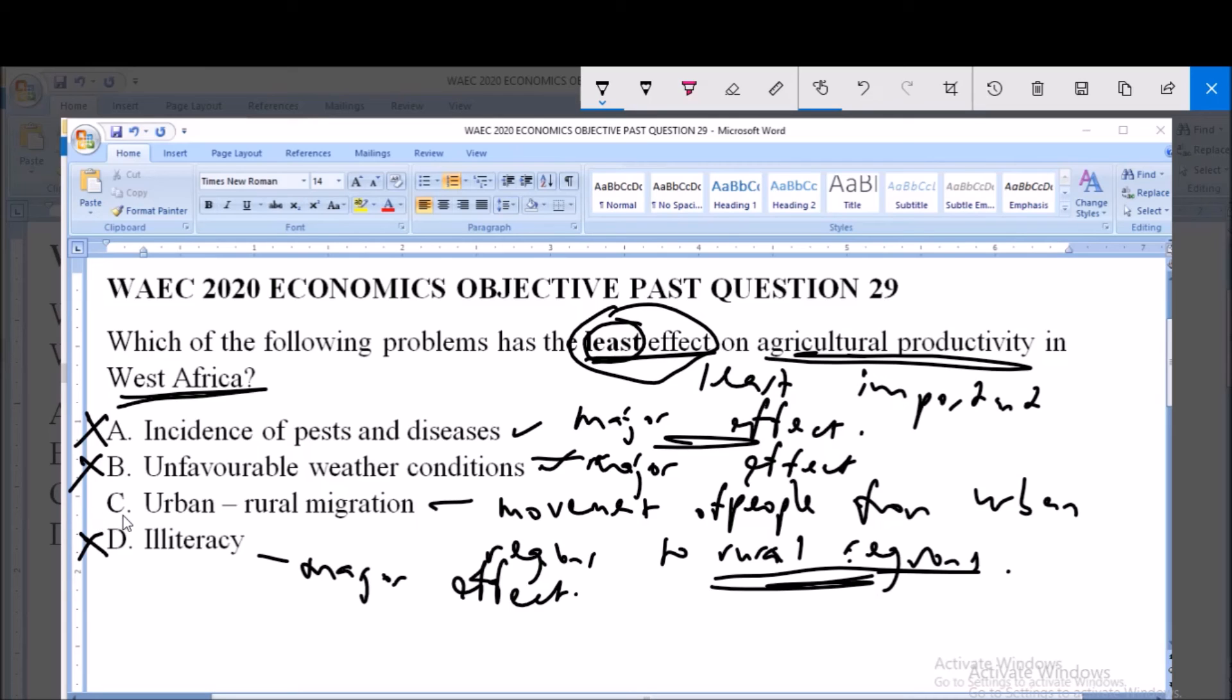Now option C, urban rural migration as we established is the correct answer to this question as not having a major effect on agricultural productivity in West Africa. Thank you and please subscribe to this channel for more videos and for more past questions and answers.